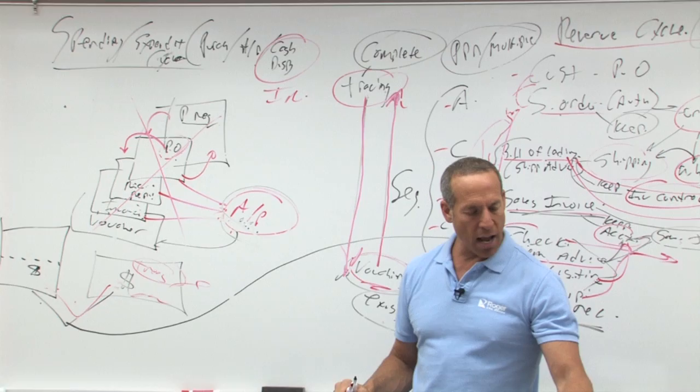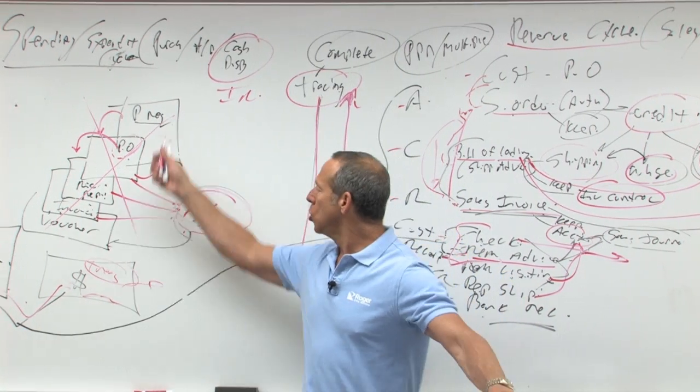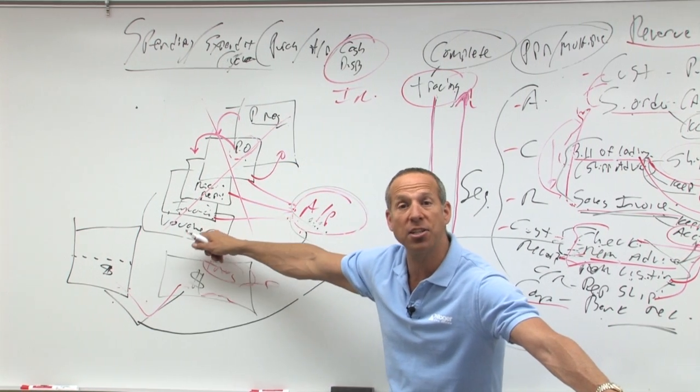Let's see. A, they should stamp, perforate, or otherwise cancel supporting documents after payment is made. Who cancels these after payment is made? The treasurer.